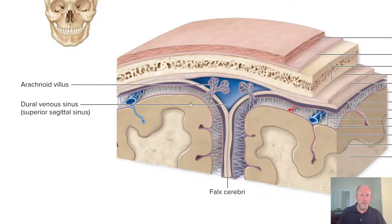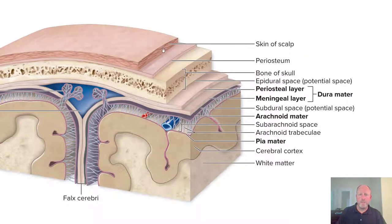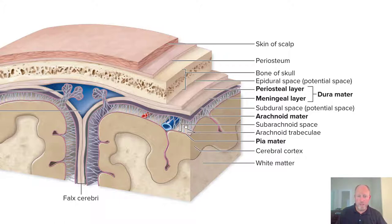Looking at this image, we can see the arachnoid villus and the dural venous sinus — the superior sagittal sinus — and the falx cerebri, which separates the left and right hemispheres. We have the skin of the scalp, the periosteum, and the bone of the skull. The periosteal layer and meningeal layer form the dura mater. The subdural space is the potential space between the meningeal and arachnoid layers. The subarachnoid space lies between the arachnoid trabeculae and the pia mater, down to the cerebral cortex and white matter.